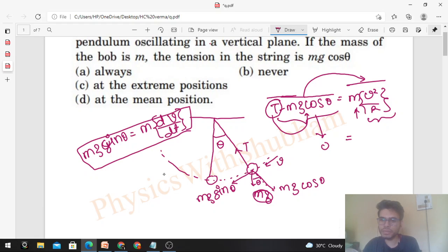and this term becomes zero. m cannot be zero, r is also not zero - this means v is zero. And where is v zero? At the extreme position. When the pendulum is at its extreme position, it comes to rest for an instant.